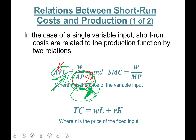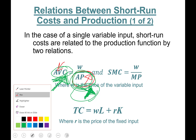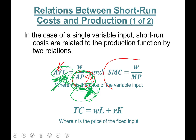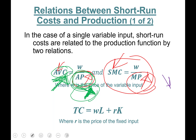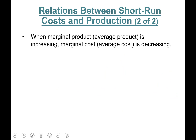The same relation holds for marginal cost and marginal product. If marginal product goes up, the last worker adds more than the previous one, so marginal cost is going to decline. If marginal product is going down — the last worker is actually adding less than the previous one — this is diminishing marginal product of labor, and marginal cost is going to climb up.